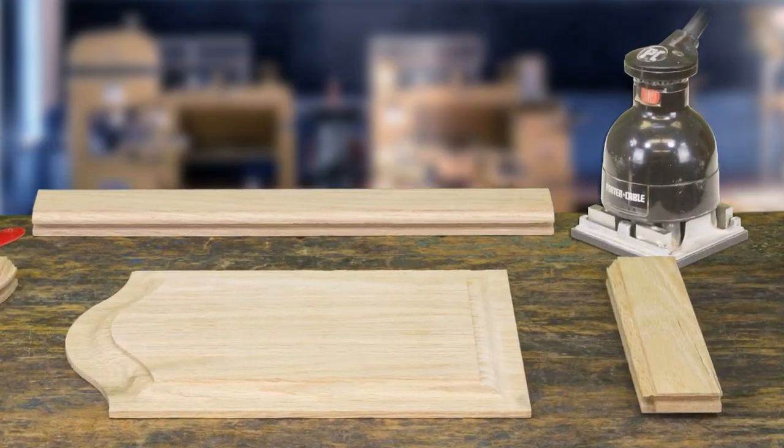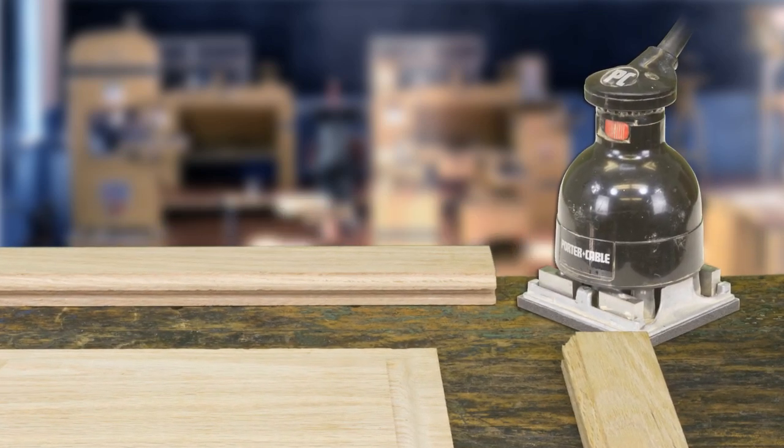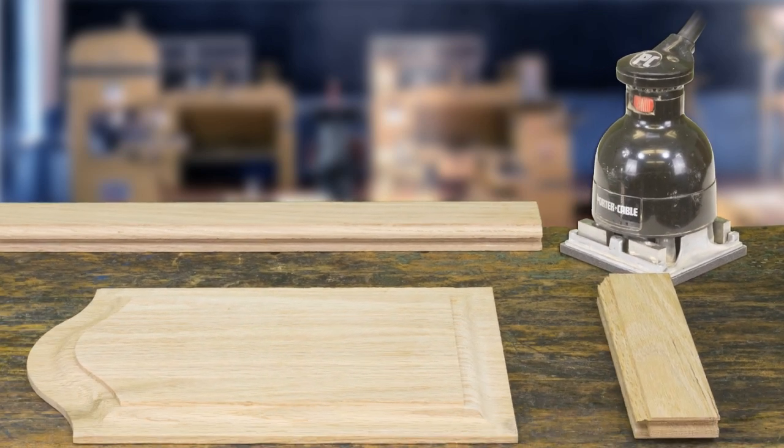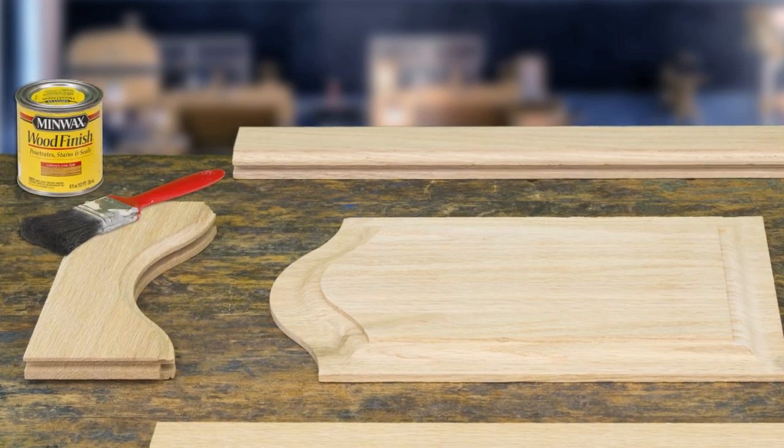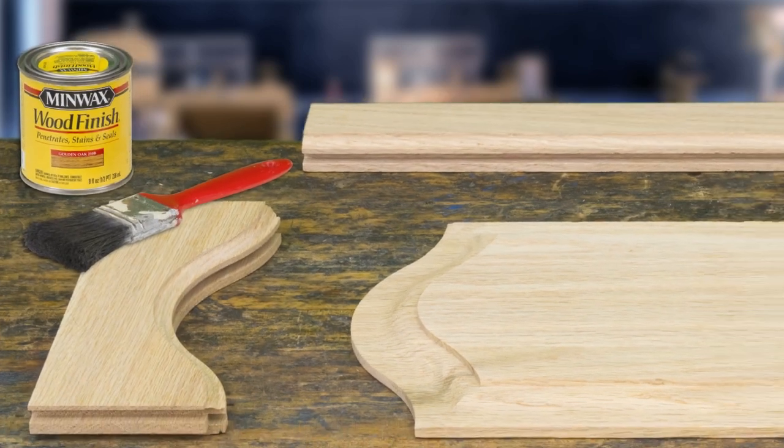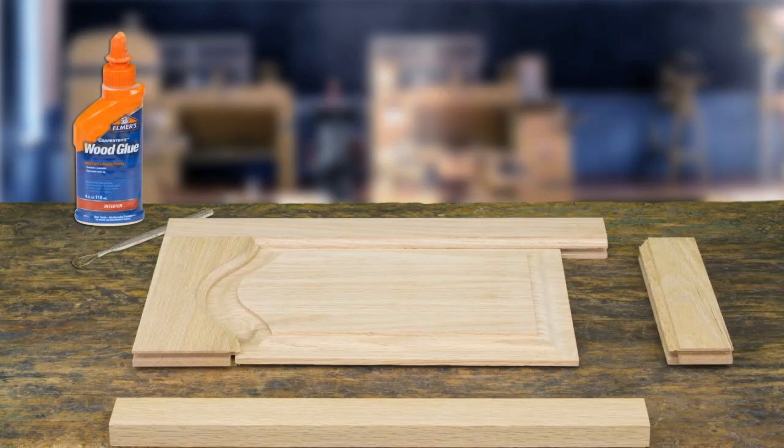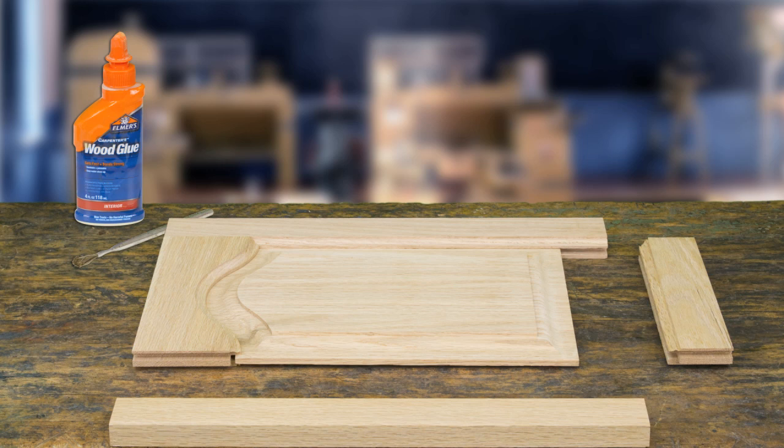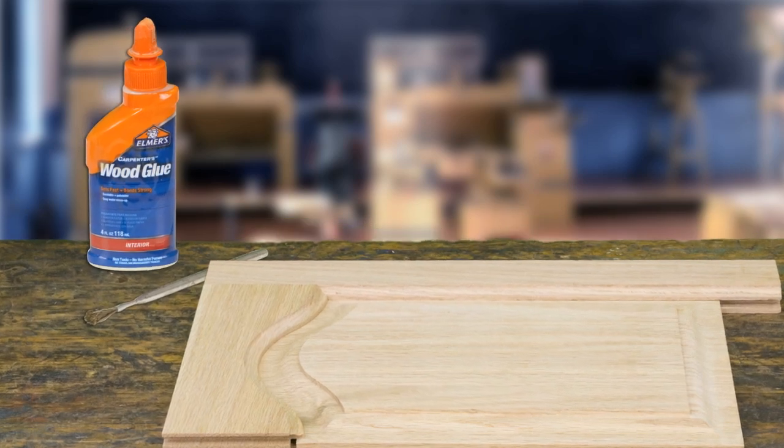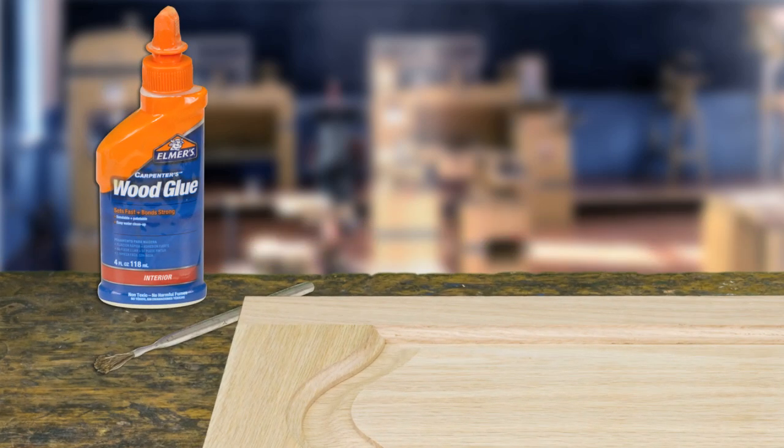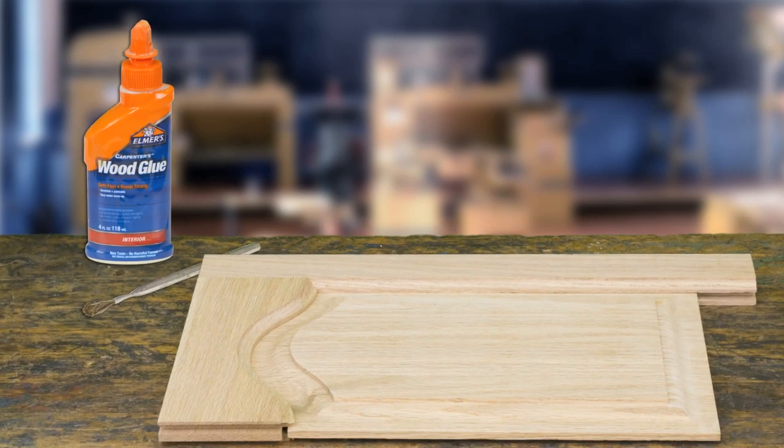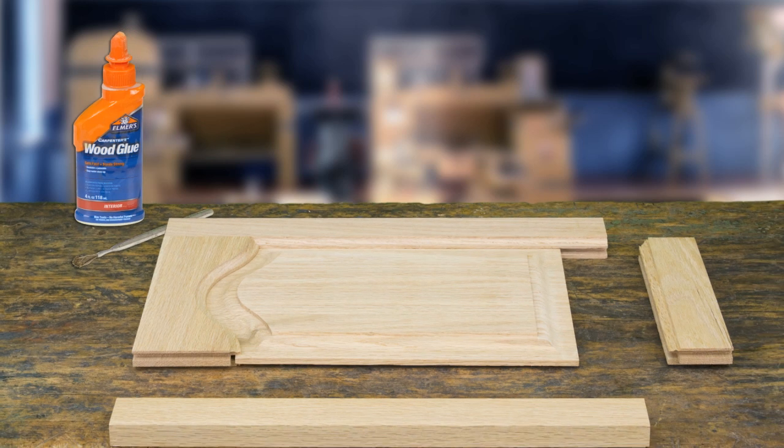Sand the panel faces and raised panel profiles. To avoid a line showing up as the panel shrinks, pre-stain and apply one coat of finish to the panel before assembly. Dry fit the parts and check your assembly. Apply glue to one end of the cathedral rail and attach it to one of the stiles. Slide the panel in the rail and stile, then glue and attach the opposite rail and stile. Clamp and check for square by measuring diagonally each way.